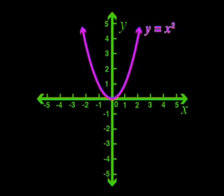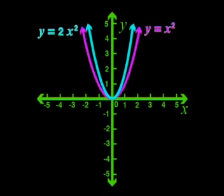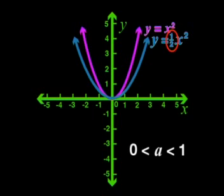Now what about the effect of changing the a of a quadratic function? If the a value is positive, the graph turns upwards with the turning point at its minimum. If we increase a, like in y equals 2x squared, the new graph is thinner than the parent graph — the arms are closer together. If a is between 0 and 1, the new graph is wider than the parent graph, with arms further apart, as in y equals a half x squared.